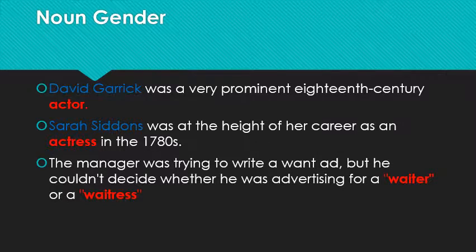Noun gender is when the noun changes because of the gender. In the world we are divided into women and men, so between the genders they may have a different noun. For example: 'David Garrick was a very prominent 18th-century actor.' The word 'actor' is identically linked to a man — David Garrick is a man — so it's called 'actor.' The noun can be changed because of the gender of the subject.